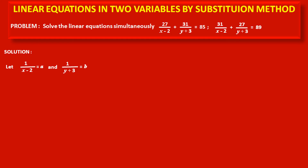Substituting these assumptions in the given equations, we get 27a + 31b = 85. Our first equation becomes 27a + 31b = 85 — consider this as statement number 1. And the second equation becomes 31a + 27b = 89 — consider this as statement number 2.